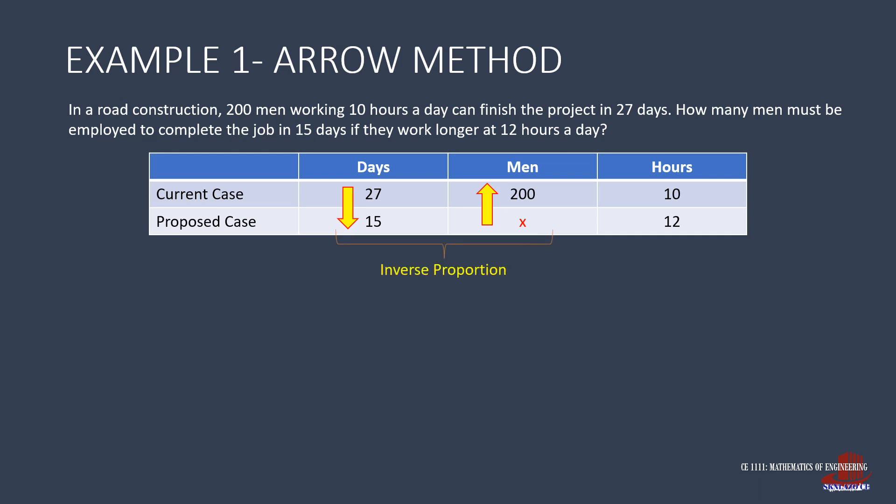Next is to compare men and hours. More men working will be requiring lesser hours to finish the job, so this is another inverse proportion. The next step is to write the equation. The ratio with the unknown will be isolated, and it would be equated with the product of the two known quantities. But how to write the numerator and denominator depends on the arrow. The ratio starts from the arrow's tail to its head.